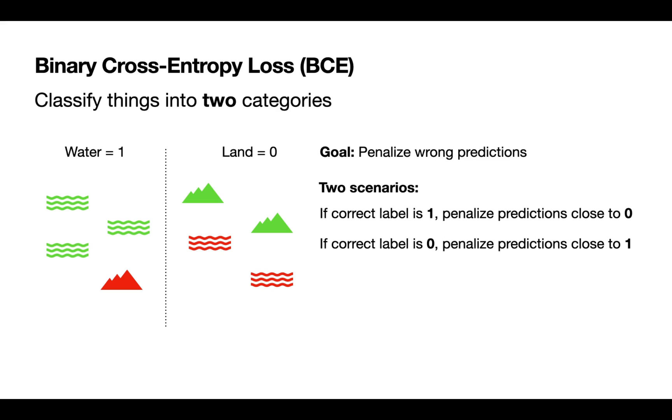The simplest kind is called the binary cross-entropy loss, or BCE. This is when we want to classify things into two categories, thus the binary. The loss here is we want to try and penalize wrong predictions. We want to assign large values to wrong predictions and small values to correct predictions. Because we have two categories, we really only have two scenarios.